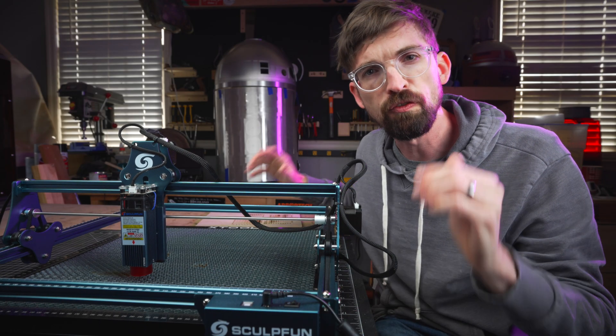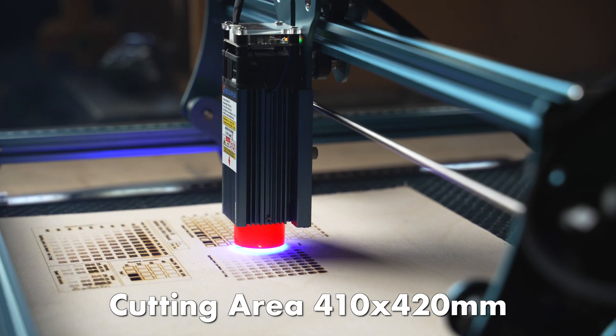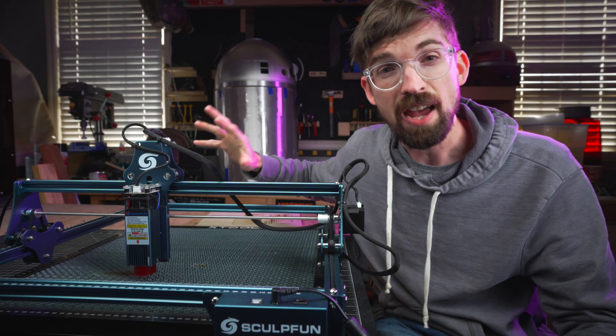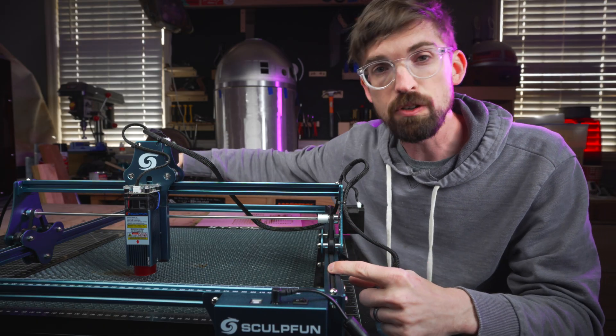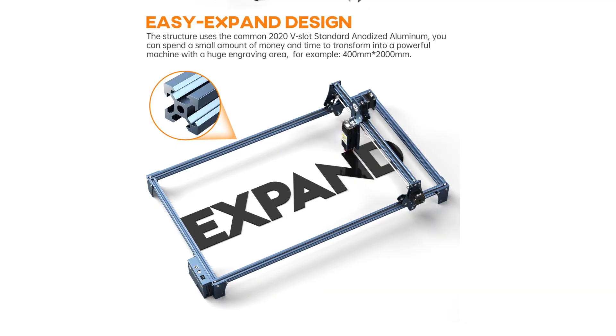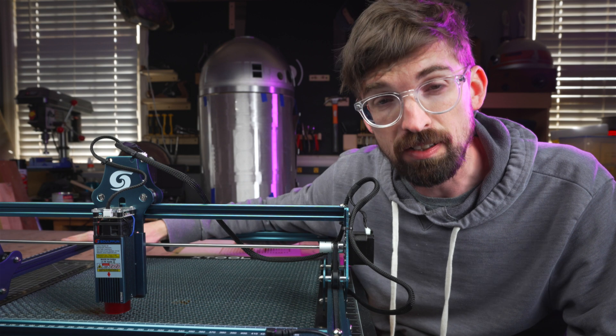The frame is 410 by 420 millimeters. This is slightly larger than what you would normally find with Ortur. They also come with an extension kit that will extend these rails to 950 millimeters, so over double the length of the machine. That's about 100 bucks to add on to the price of this.